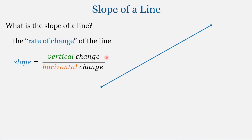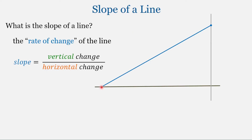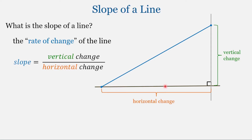Let's look at vertical change first. I'm going to pick one point on this line and add a vertical line through it. Then I'm going to pick a second point and place a horizontal line through that point. These two lines are perpendicular, meaning they intersect at 90 degrees. The vertical change is this distance here, and the horizontal change is this distance.